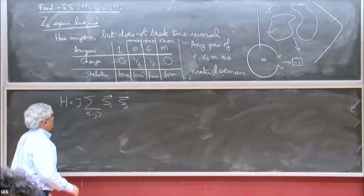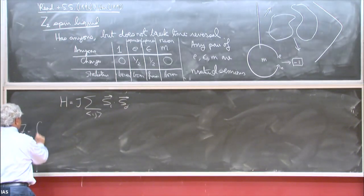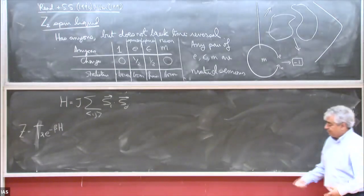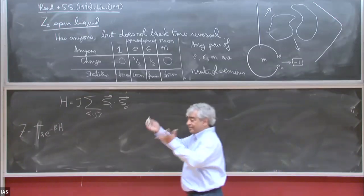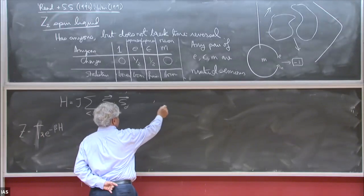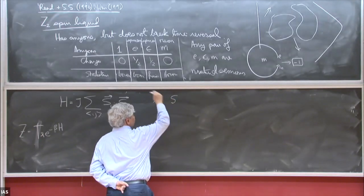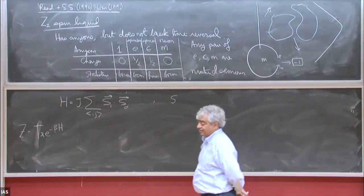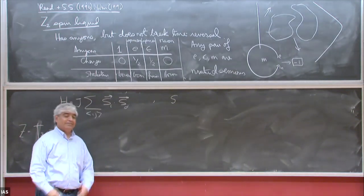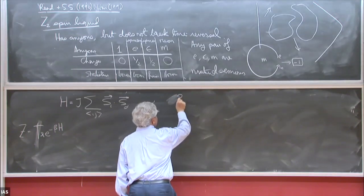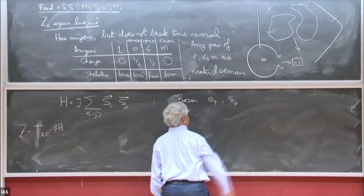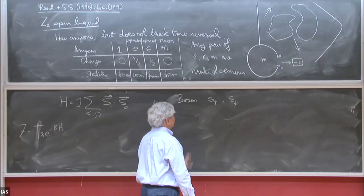We want to compute the partition function, which is Tr[e^{-βH}]. We're going to proceed in exactly the way we proceeded in the paramagnon theory, but in a way that doesn't break any symmetry — no condensates that break symmetry will appear. Influenced by the considerations from the early days, where it was clear you should have excitations with fractional charge or fractional spin, why not just make them the things you work with? So we introduce another boson, which I'll call s_α — there are two kinds, s_up and s_down — with fractional spin S_z equals plus or minus one half.